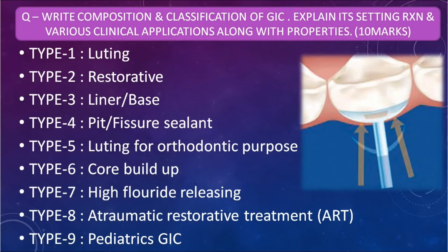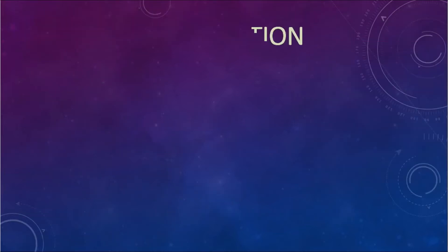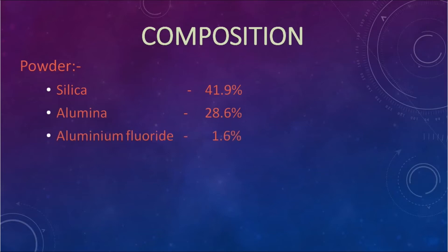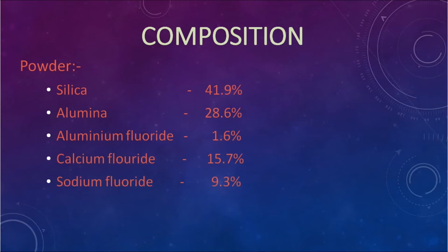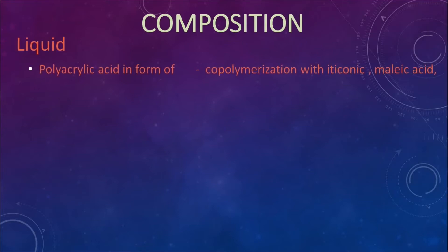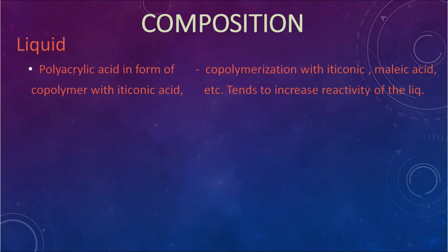A question comes: write the composition and classification of GIC, explain its setting reaction and various clinical applications along with properties. Composition — powder contains: silica 41.9%, alumina 28.6%, aluminum fluoride 1.6%, calcium fluoride 15.7%, sodium fluoride 9.3%, and aluminum phosphate 3.8%. Liquid contains polyacrylic acid in the form of a co-polymer with itaconic acid, malic acid, and tartaric acid.